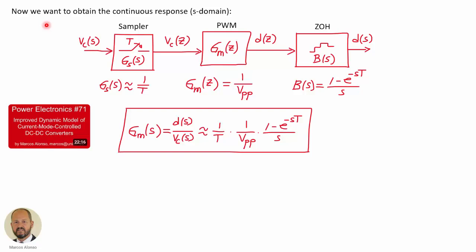Now we want to obtain the continuous-domain response of the modulator considering the sampling effect, following the same process as in Power Electronics number 71 for current mode control. From the input (control voltage) to the output (generation of the duty cycle), we have the sampler with gain approximated by 1/T, the PWM modulator discrete behavior with gain 1/V_PP, and then the zero-order hold that generates the analog duty cycle value from the discrete value. The zero-order hold transfer function is the standard expression, so the complete transfer function in the S domain is the product of these three gains.